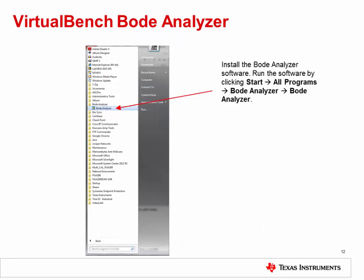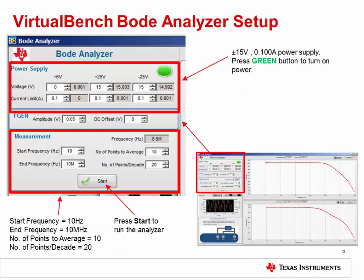This lab requires additional BodeAnalyzer software. Install the software, then run it by clicking Start, All Programs, BodeAnalyzer, BodeAnalyzer. In the configuration panel, set the power supply to plus or minus 15 volts at 0.1 amps. Press the green button to turn on the power. Set the start frequency to 10 hertz and the end frequency to 10 megahertz. Set the number of points to average to 10 and the number of points per decade to 20. Press Start to run the BodeAnalyzer.